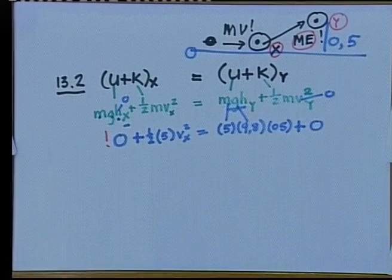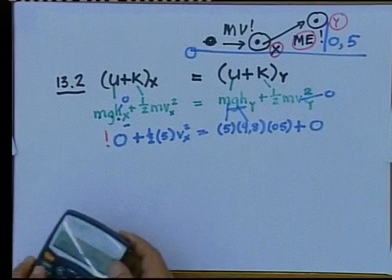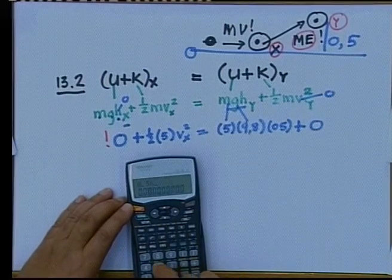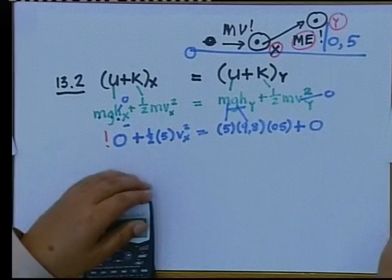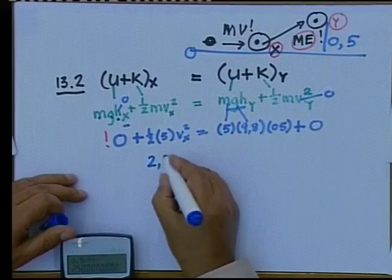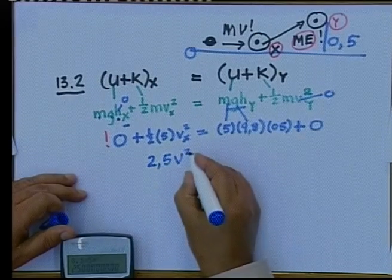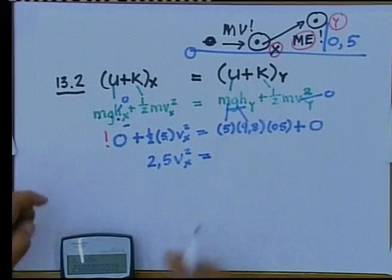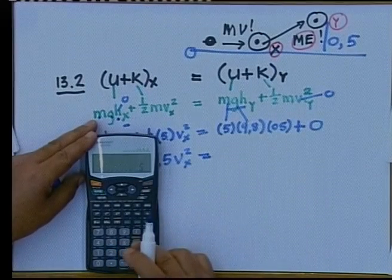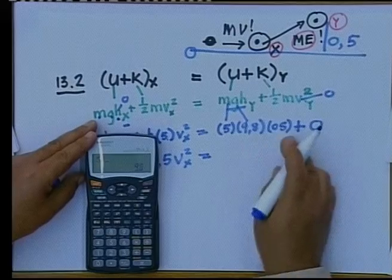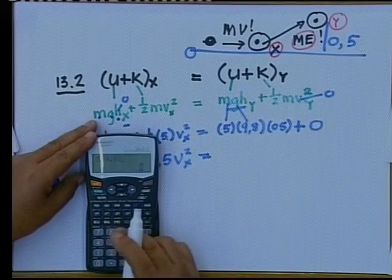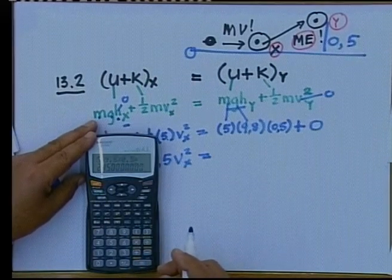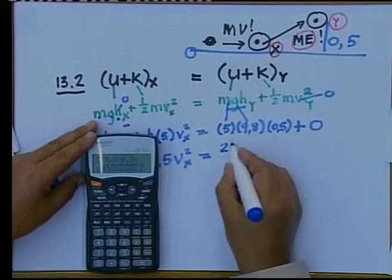Make sure that you understand what I've done there everybody. And now of course out comes the calculator. So it's 0.5 times 5. Oh but I should have known that, it's 2.5. 2.5 v squared at x. 0 plus 2.5 v squared at x is equal to, and I do the next one quickly, 5 times 9.8 multiplied by 0.5. Did I put a 0.5 there? Yes. And that should give me 24.5. That is right. 24.5.